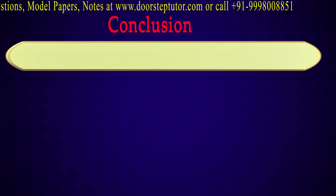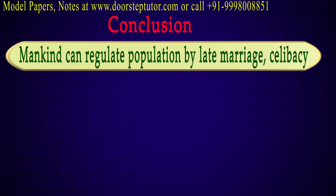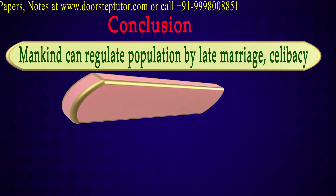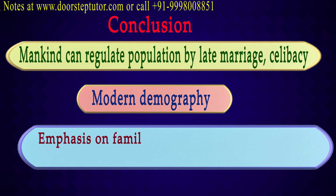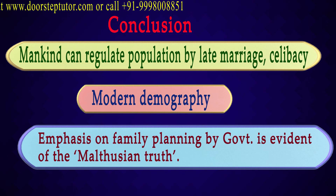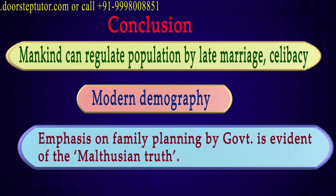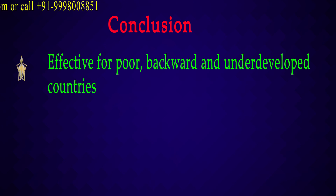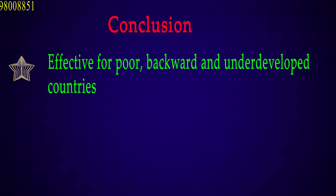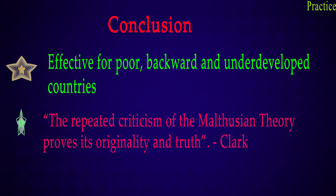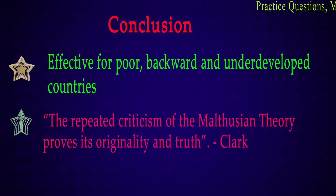In conclusion, Malthus said that mankind can regulate the population by deferred marriage and celibacy. He was one of the first thinkers to talk about modern demography and emphasized family planning — very much evident even today when governments talk about family planning so you can lead a better life and put less stress on the earth. The Malthusian theory is very effective for poor, backward, and underdeveloped countries who are already struggling. According to Clarke, the repeated criticism of Malthusian theory proves its originality and truth, and it is as much applicable today as when he first proposed it.